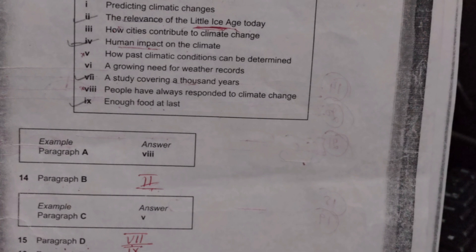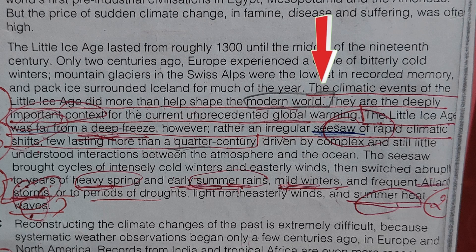Questions 14 to 17 are paragraph heading questions. The first question is Paragraph B, its heading is number 2: The Relevance of the Little Ice Age Today. Little Ice Age की आज के वक्त में क्या role है? The climatic events of the Little Ice Age more than helped shape the modern world. Modern world को shape करने के लिए Little Ice Age ने बहुत help की है। They are deeply important context for the current unprecedented global warming. The Little Ice Age was far from a deep freeze, rather an irregular seesaw of rapid climatic shifts, few lasting more than a quarter century.